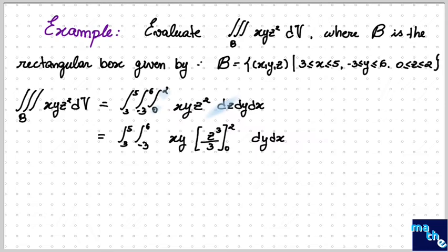Once again, we integrate in respect to Y. Making some calculations, we get 8/3 times the integral from 3 until 5 of X times the integral of Y evaluated for 6 and -3, dx.